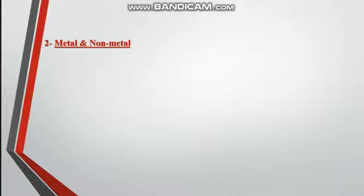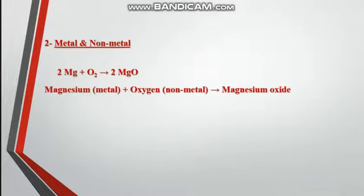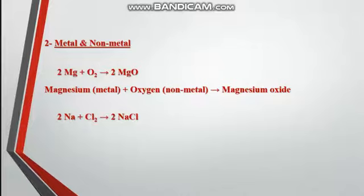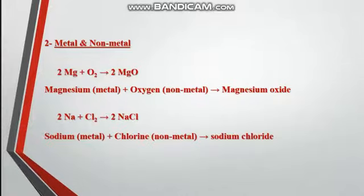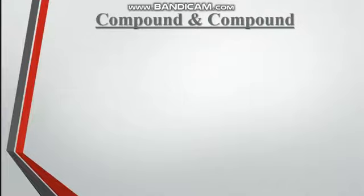In the second case, if the first element is a metal and the second is a non-metal. For example, 2Mg plus O2 forms 2MgO. Mg is a metal and O2 is oxygen, forming magnesium oxide MgO. Another example: 2Na plus Cl2 forms 2NaCl. Na is sodium, which is a metal, and it reacts with chlorine, which is a non-metal, to form sodium chloride.